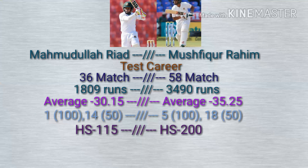Mushfiqur Rahim smashed 5 centuries and 25 half-centuries; Mahmoudullah Riyadh smashed 3 centuries and 19 half-centuries. The high score of Mahmoudullah Riyadh in ODIs is 128 and Mushfiqur Rahim is 117.